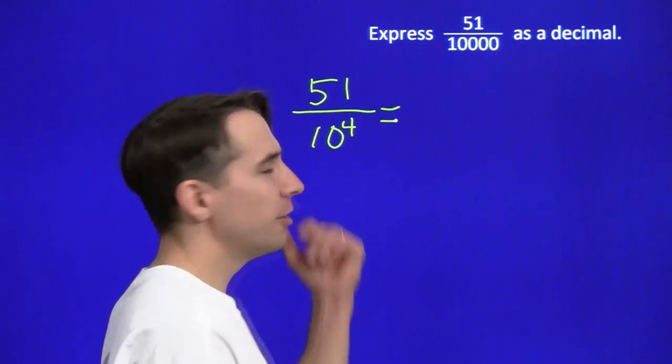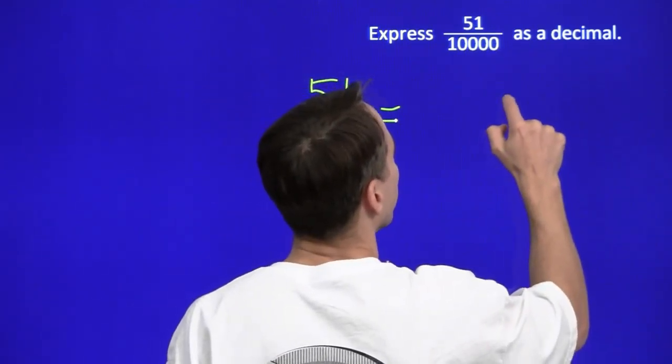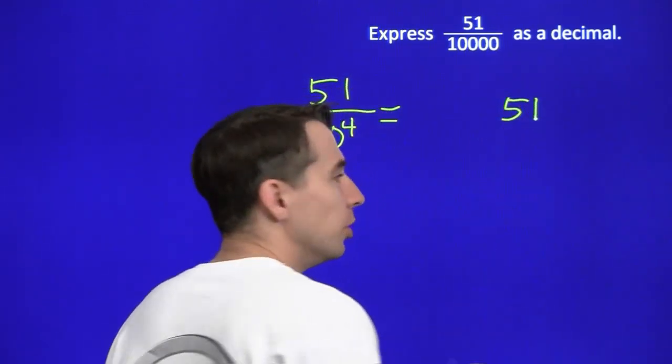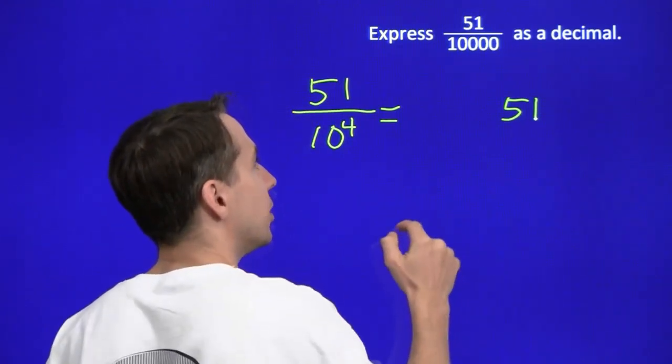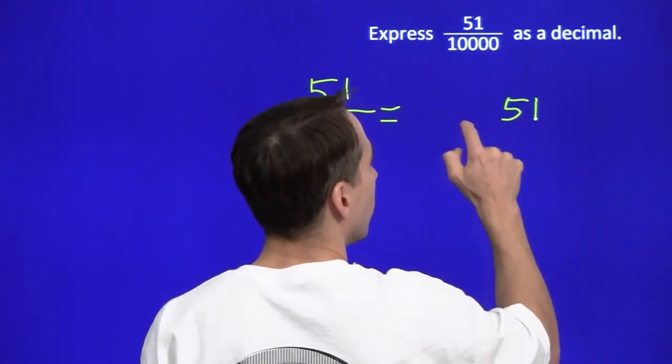So we're dividing 51 by 10. We're going to divide by 10 four times, which means we move the decimal place to the left four times. Start out here. One, two, three.